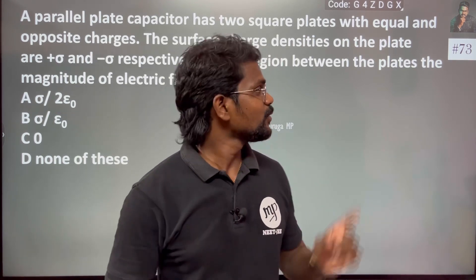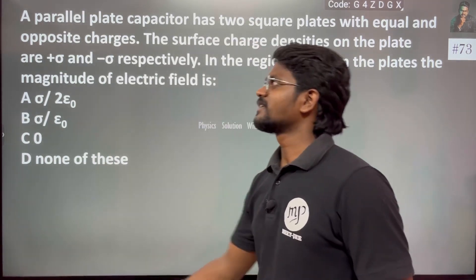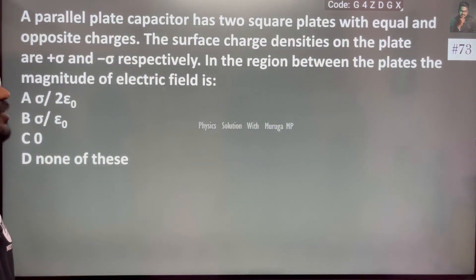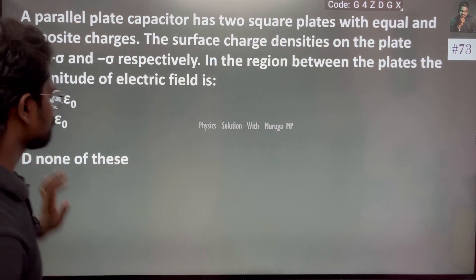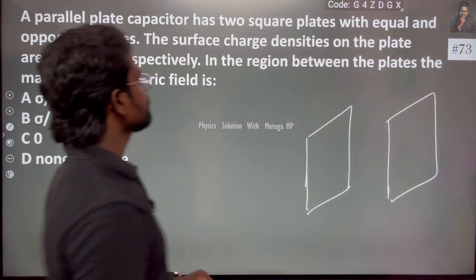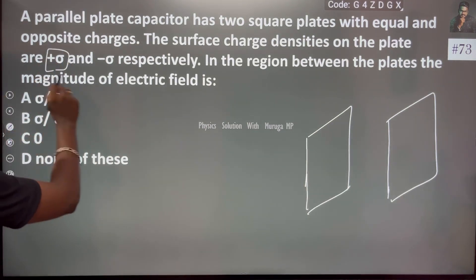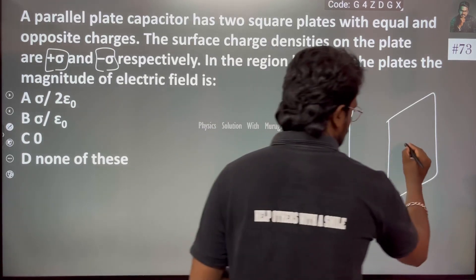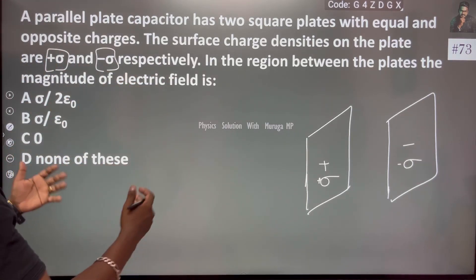Hi everyone. We have a simple one-question problem. We have a parallel plate capacitor — two square plates with equal and opposite charges given to us. So we have our two parallel plate capacitor. The surface charge density on the plates are positive sigma and negative sigma. It is very clear that one plate is positive and the other plate is negative charged plate.